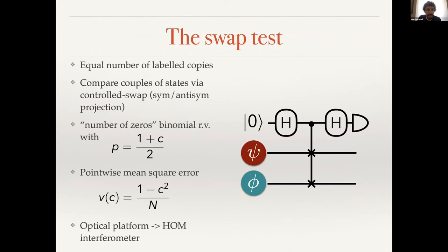The swap test — many of you will know it — essentially acts on couples of copies of states psi and phi, comparing them with the controlled-SWAP operation. This is essentially a projection on the symmetric and anti-symmetric subspace of the total system. By repeating this test on a large number of copies, you get outcomes following a binomial distribution whose mean is connected to the value of the overlap, and you can see that you already hit the scaling of 1/N.